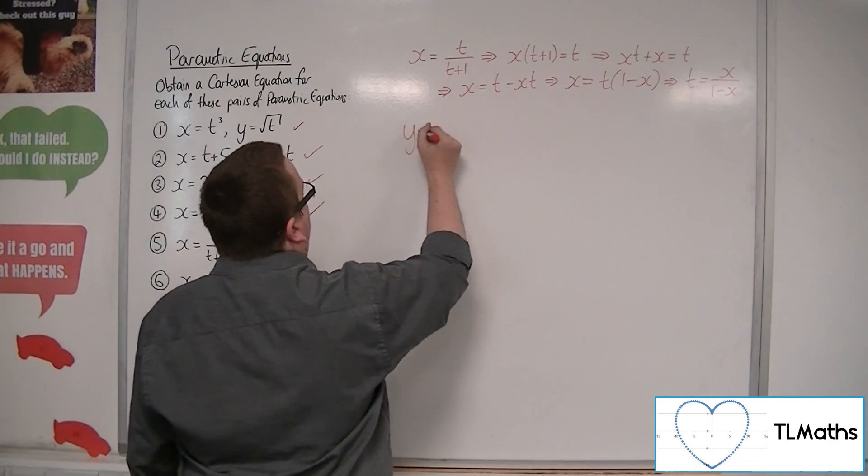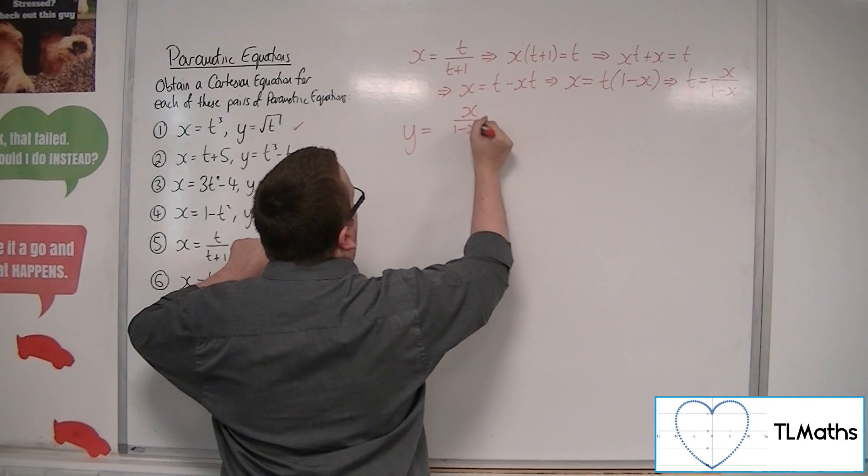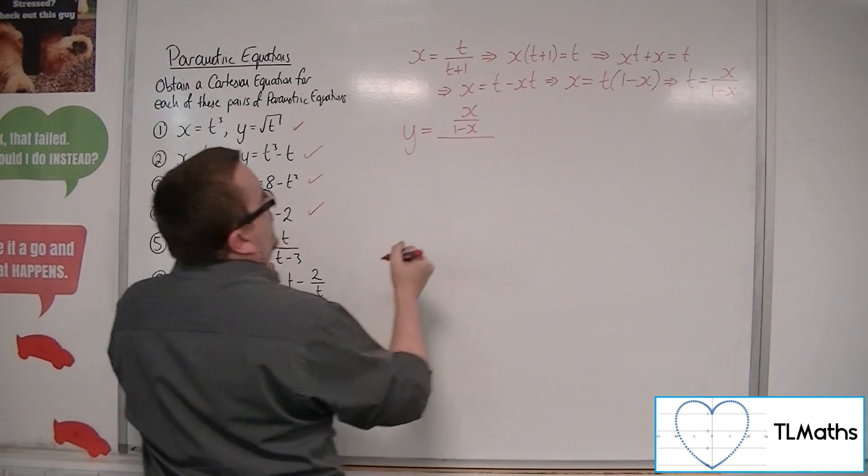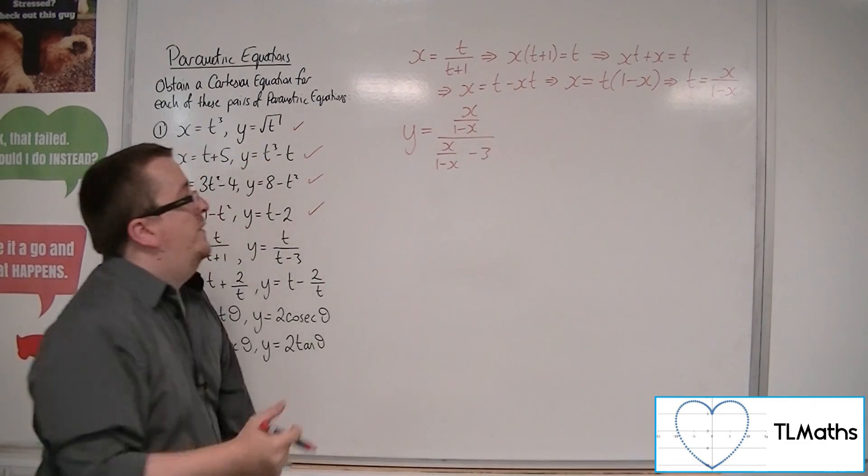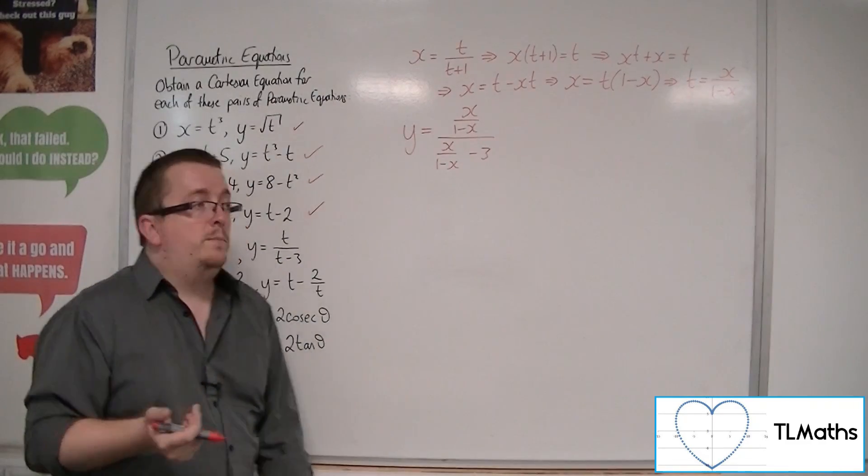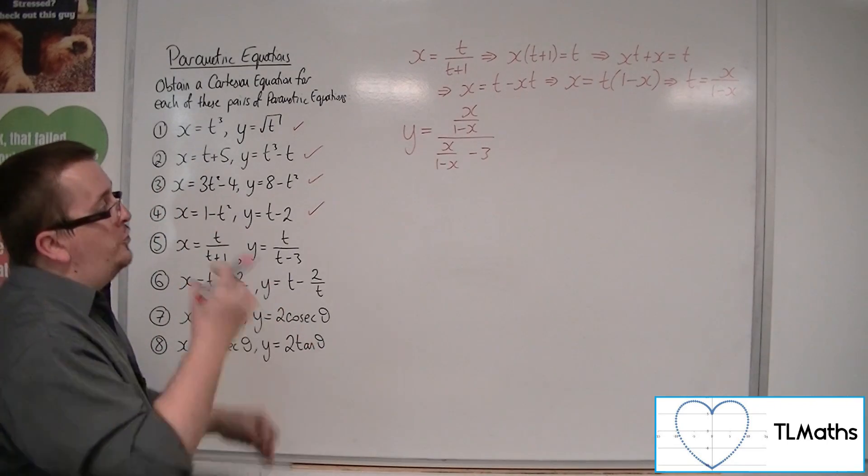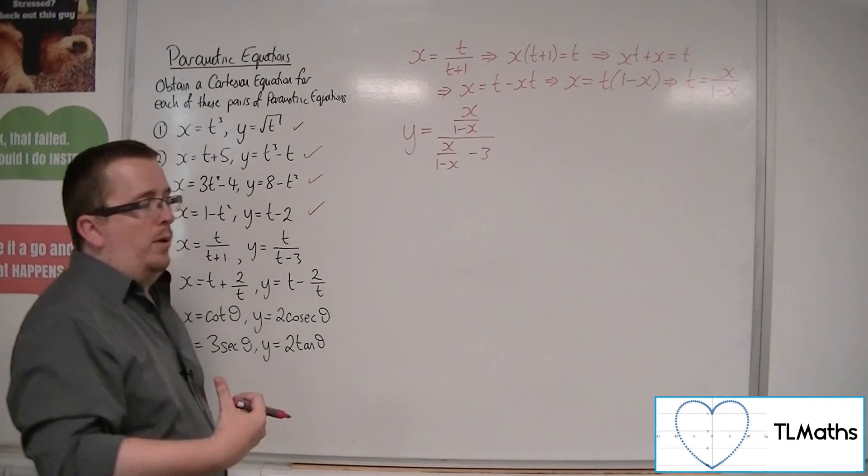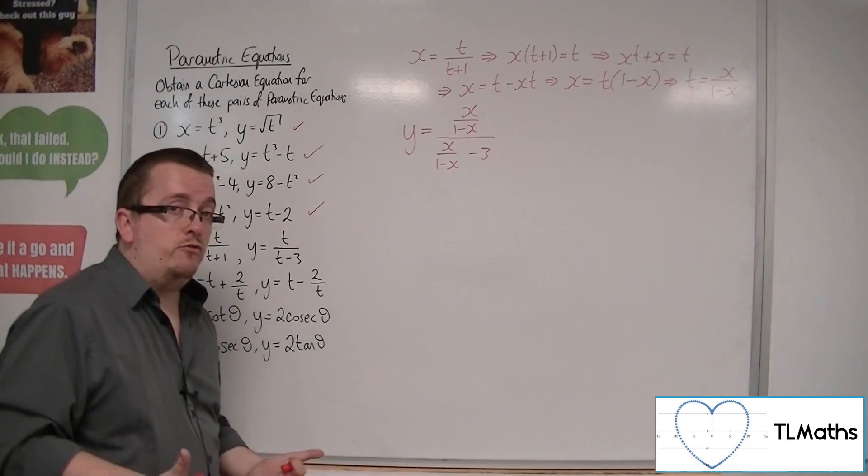So I can now substitute that into the second equation. So y is equal to t, so x over 1 minus x, over t, so x over 1 minus x, take away 3. Now, this is a Cartesian equation, but it is absolutely ghastly having fractions within fractions.